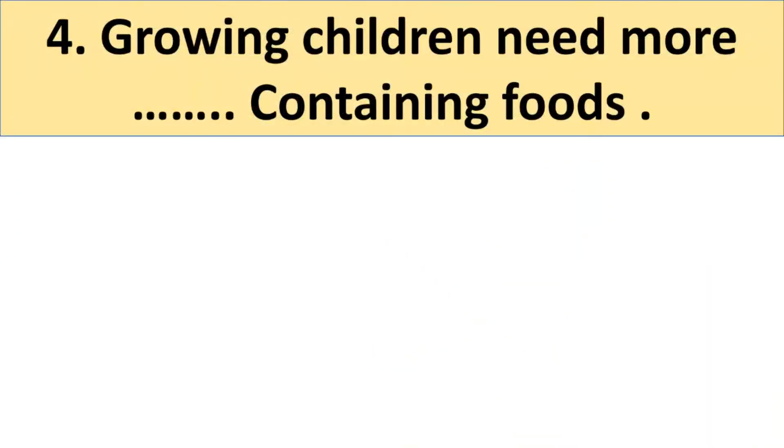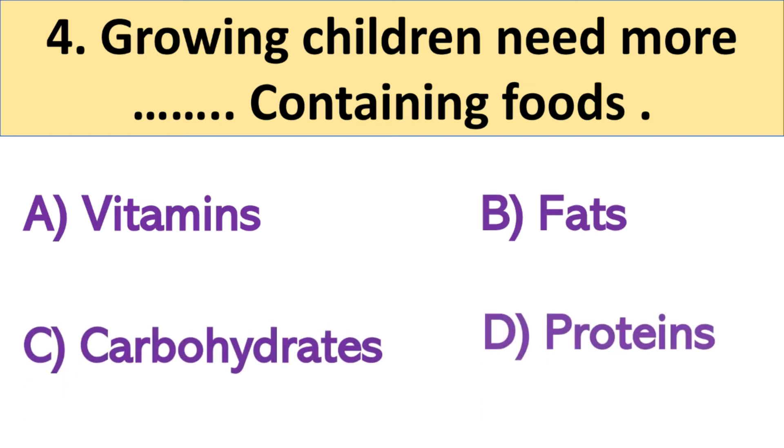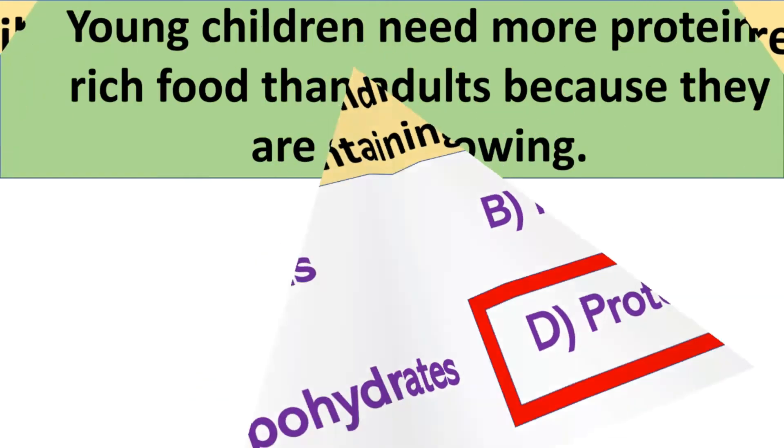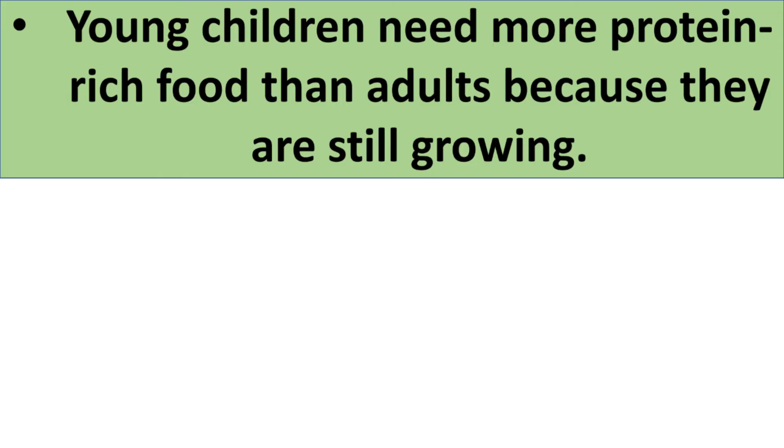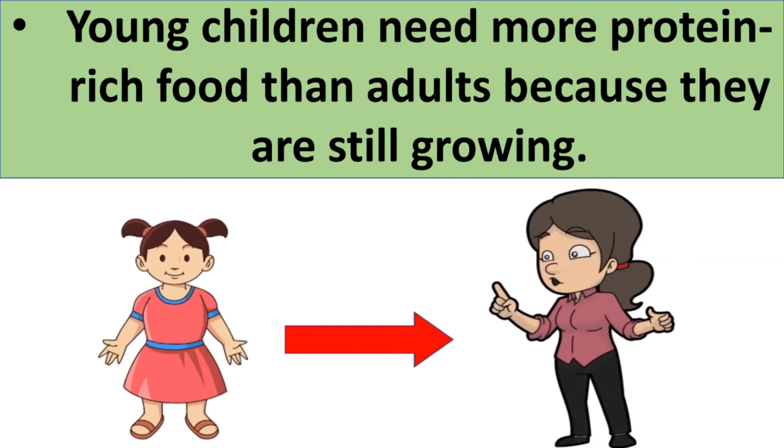Next question. Growing children need more blank containing foods. And your options: A. Vitamins, B. Fats, C. Carbohydrates and D. Proteins. And the right answer is D. Proteins. So young children like you need more protein rich food than adults because you are still growing.